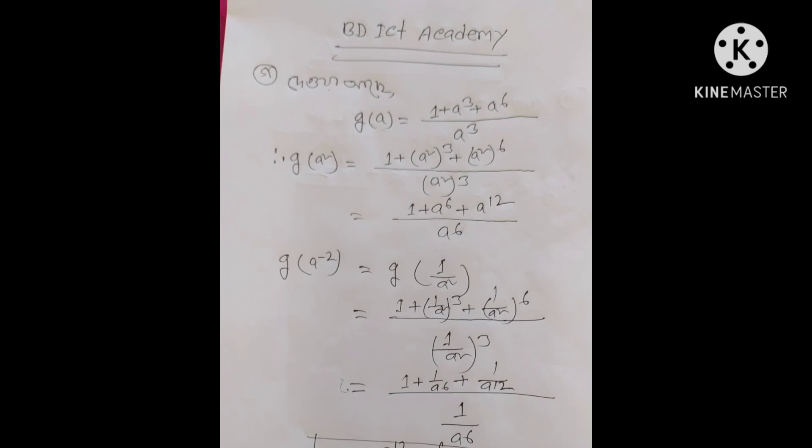a to the power 6 plus a to the power 6 plus a to the power 6, and this is a to the power 6. Now the common ratio (g.r.) is g minus 2, so g = 1 by a squared. So: 1 plus (1/a²) cubed plus (1/a²) to the power 6, and this is a to the power 6.